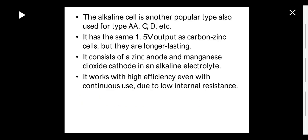The second type is the alkaline cell — another popular type also used for AA, C, and other sizes. It has the same 1.5 volt output as carbon zinc cells but is longer lasting. It consists of a zinc anode and manganese dioxide cathode in an alkaline electrolyte. It works with higher efficiency even with continuous use due to its low internal resistance.